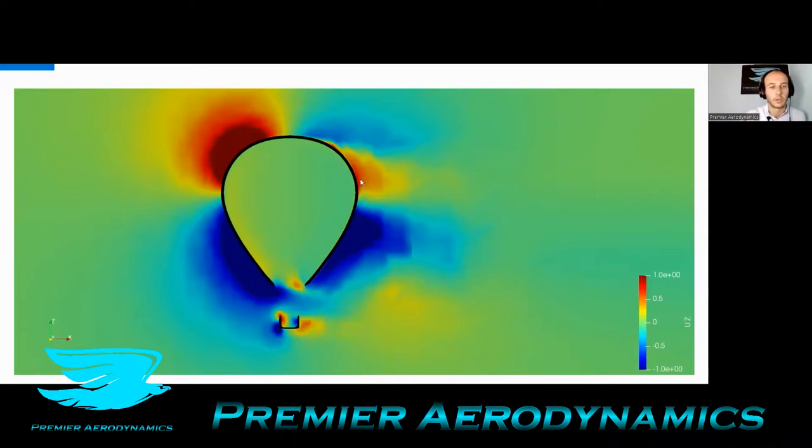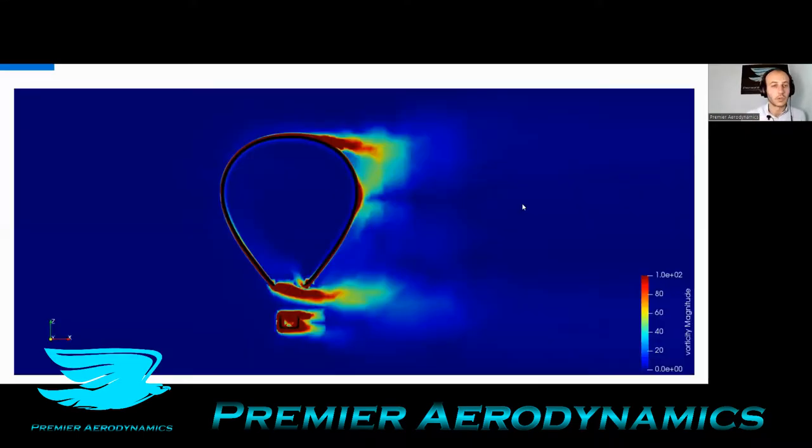And then you get flow going back up. And yeah, some funky physics going on here. And then this is the vorticity behind the balloon. So I wanted to see if there was any vorticity coming off the balloon. Sure enough, there is, just around the inside, the entry part of the balloon and around the separation area, which is to be expected. So that's pretty cool.